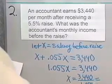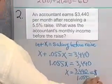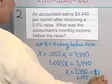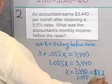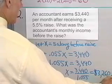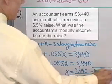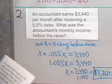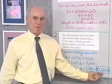That comes out to be equal to, when I do this on a calculator, I'm just going to write my dollar sign here, $3,260, and I'll just go to the nearest cent, 66 cents. That's the accountant's monthly salary before his 5.5% raise.